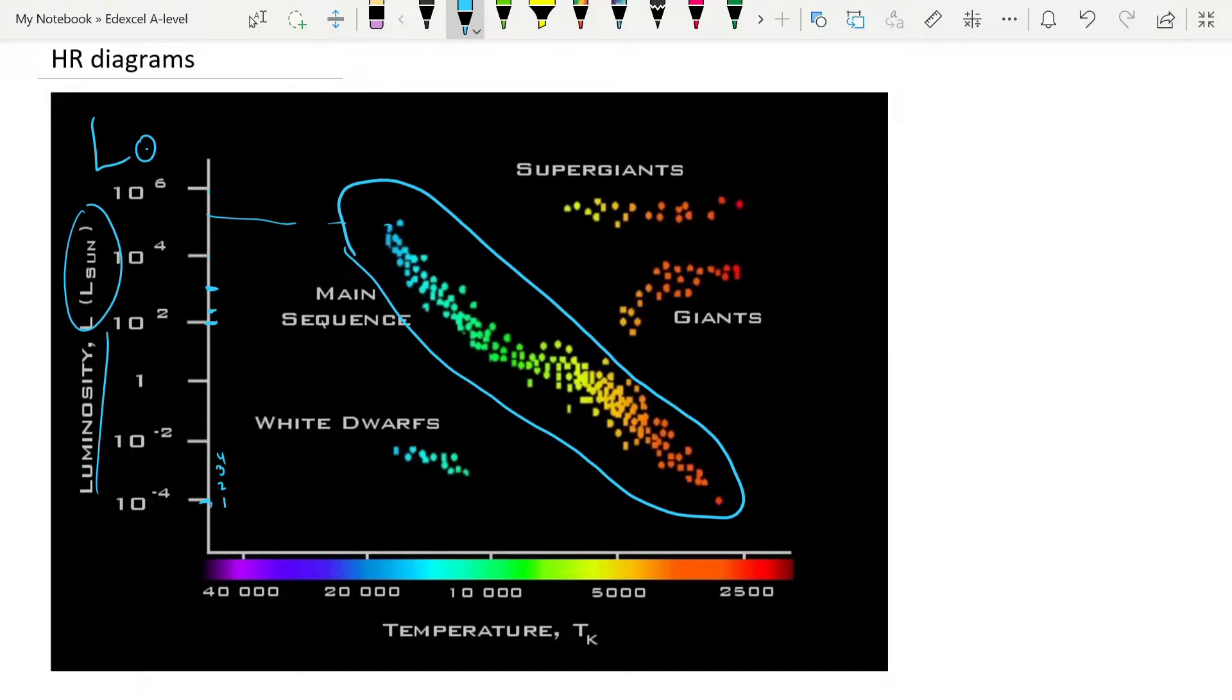We'll come back to main sequence stars in a little and what those are, but you should know that stars belong at a position on the main sequence. So for example, our sun would be somewhere in there. It doesn't move up or down along over the course of its lifetime. It's just got that luminosity and that temperature.